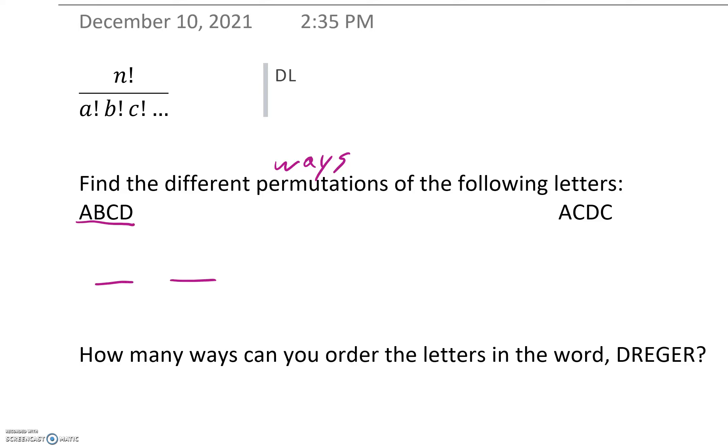We have four different letters, and we can combine them in any order. So what happens is 4, 3, 2, 1, or 4 factorial, which is 6 times 4 is 24.